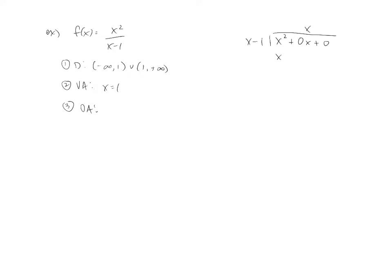So when I run this division process out, what times x gives me x²? Well, x. x² minus x. Remember to subtract, which gives us a positive x plus 0, plus 1. And again, we've got to subtract, so we get a remainder of 1.